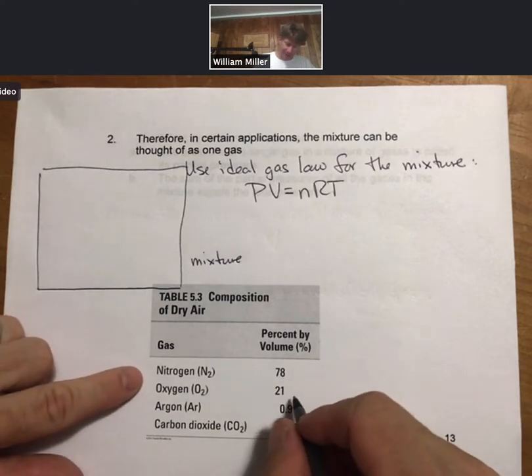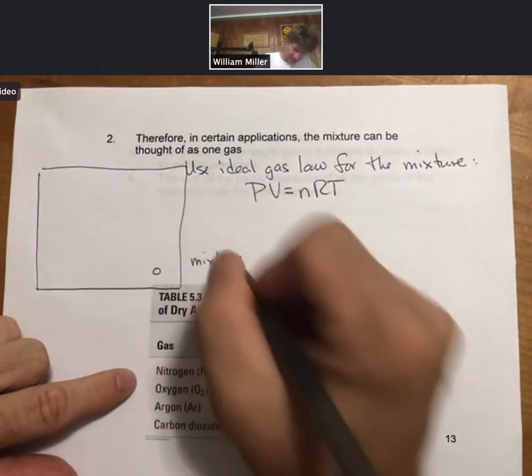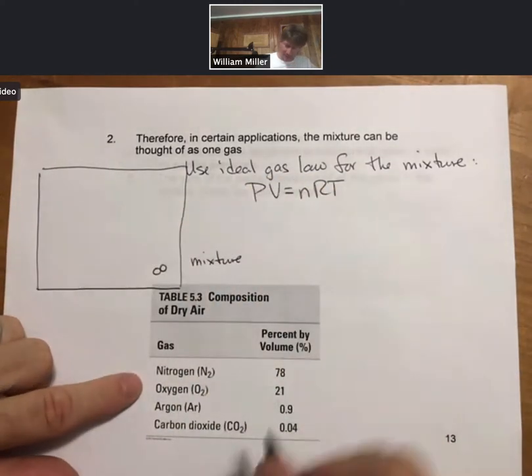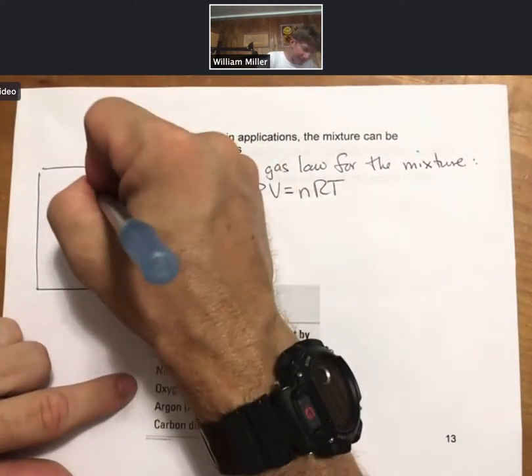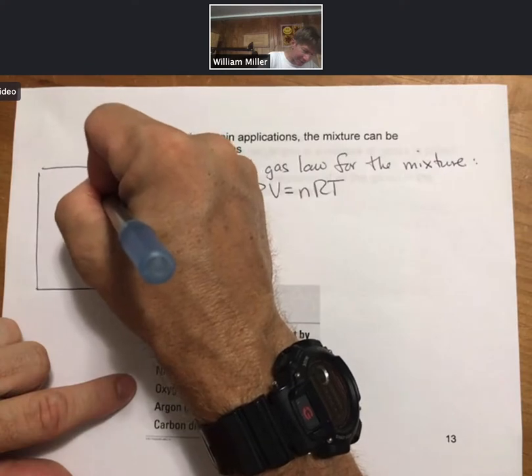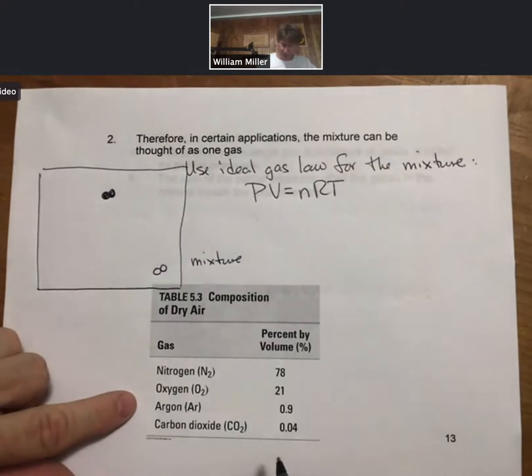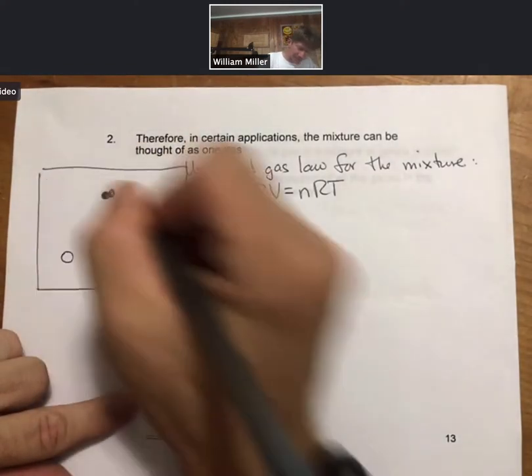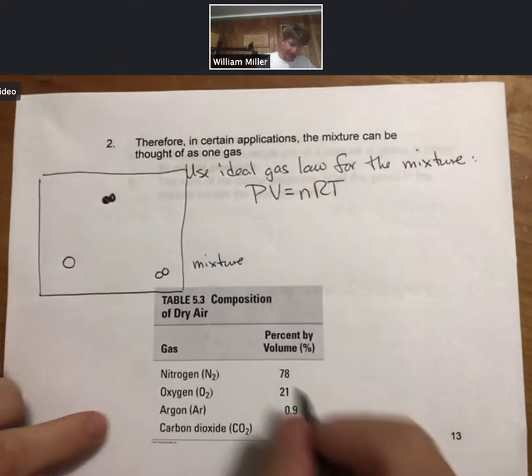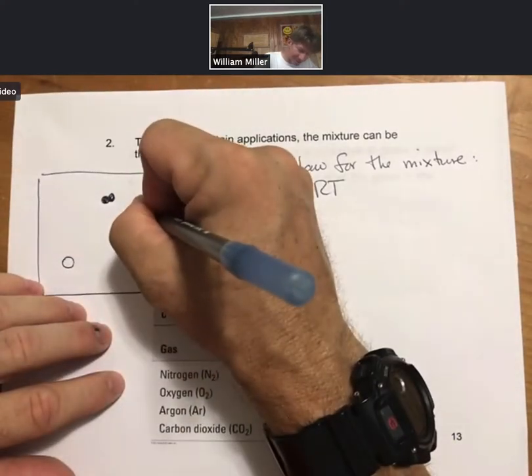If we have nitrogen, and nitrogen is going to be N2, and if we have oxygen, and I'm going to shade these in, and we have argon, and we have carbon dioxide.